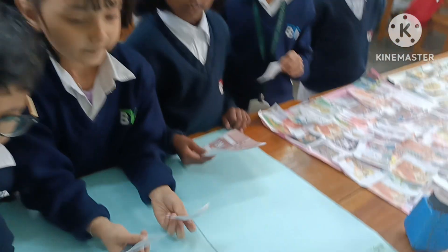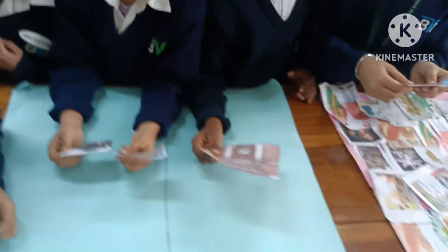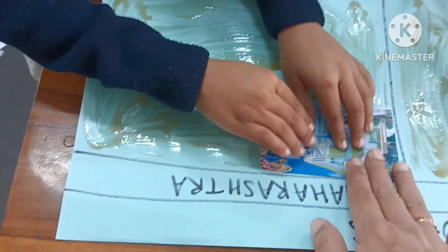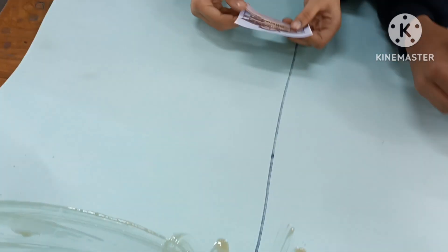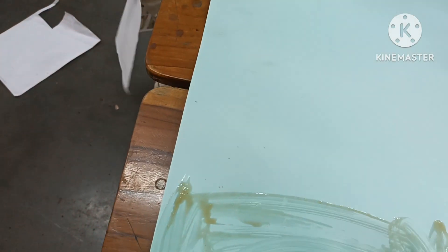Now, dear students, you have to paste the pictures of houses — houses of Sikkim and Maharashtra. Let's start pasting. Sikkim, paste it here. Very good. Sikkim, paste it here. Maharashtra, you paste here. Sikkim — very good. Maharashtra. Sikkim, paste it. Very good. I'm going to Maharashtra.